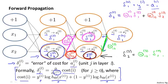And by the way, so far I've been writing the delta values only for the hidden units and excluding the bias units. Depending on how you define the backpropagation algorithm, or depending on how you implement it, you may end up implementing something to compute delta values for these bias units as well. The bias units always output the value of plus 1, and they are just what they are, and there's no way for us to change the value. And so depending on your implementation of backprop, the way I usually implement it, I do end up computing these delta values, but we just discard them and we don't use them, because they don't end up being part of the calculation needed to compute the derivatives.